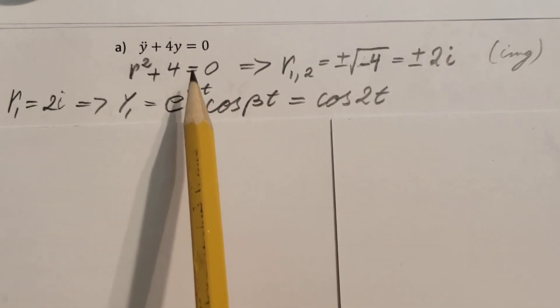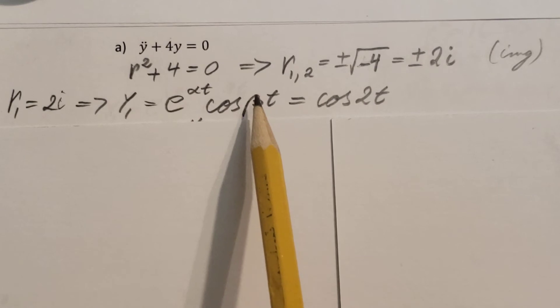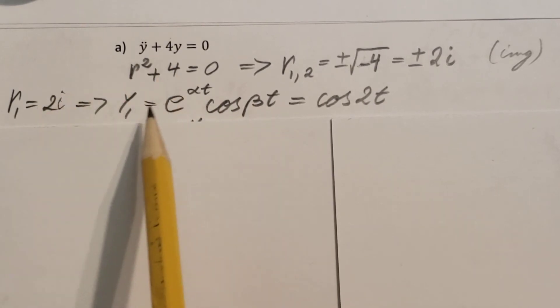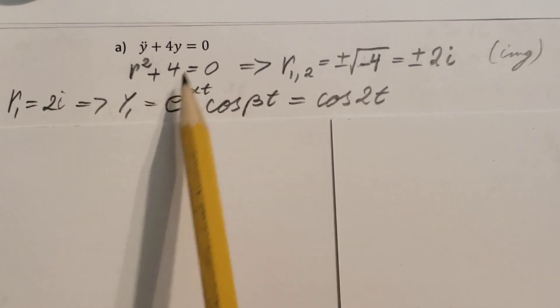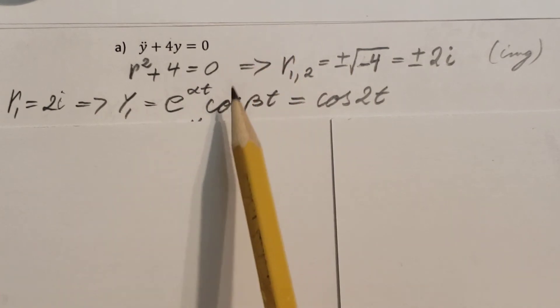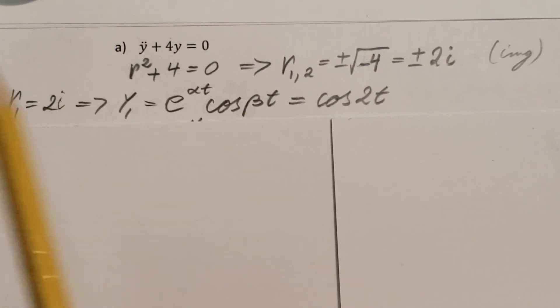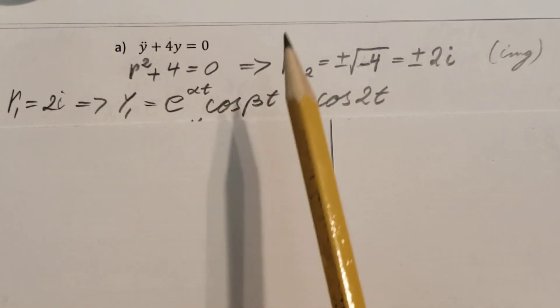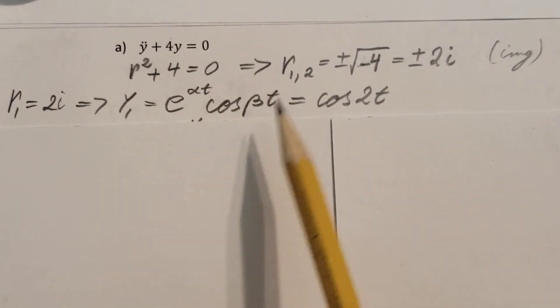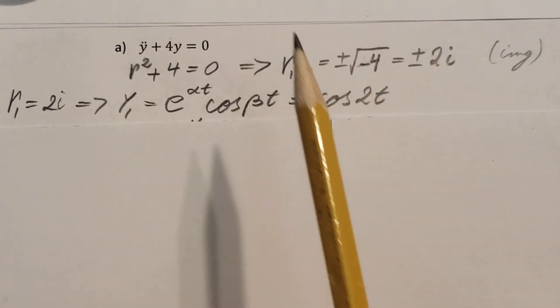Now, the alpha is my real part, the beta is the imaginary one. Real part is 0, so this cancels out. e to the 0 is 1. And here, cosine, the beta will be my 2. Cosine 2 theta. Cosine 2t, not beta.